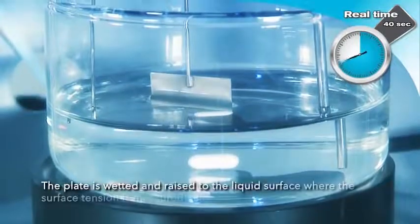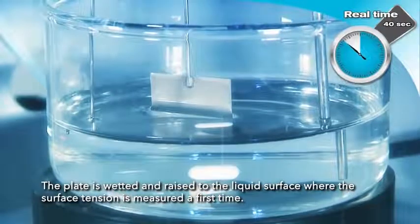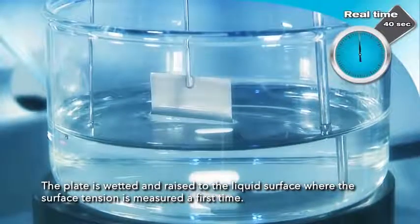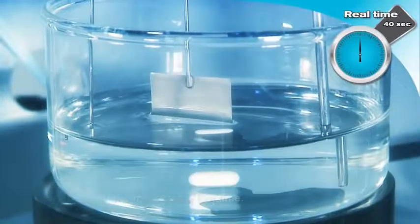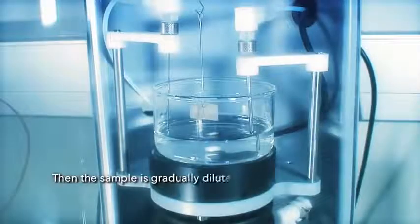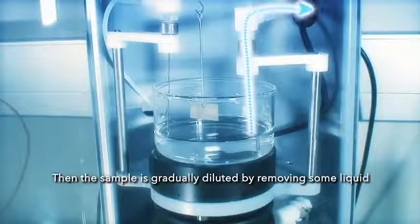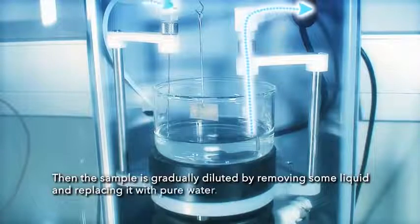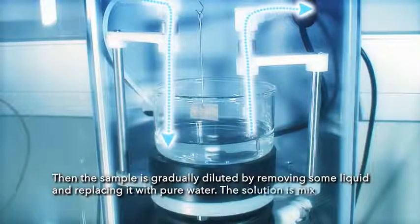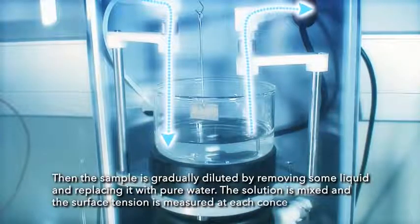The plate is wetted and raised to the liquid surface, where the surface tension is measured a first time. Then the sample is gradually diluted by removing some liquid and replacing it with pure water. The solution is mixed and the surface tension is measured at each concentration.